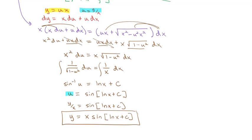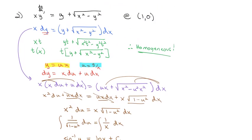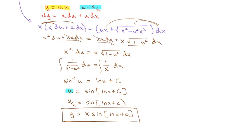These problems take more paper, but the process is simple. First, verify homogeneity by replacing x with xt and y with yt. If it is homogeneous, let y equal ux or x equal uy. Calculate dy or dx, substitute in, and solve the resulting separable equation. It's your turn to practice. Good luck on the homework, and let me know if you have any questions.